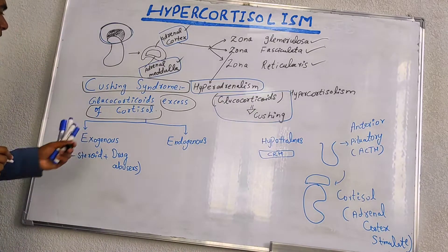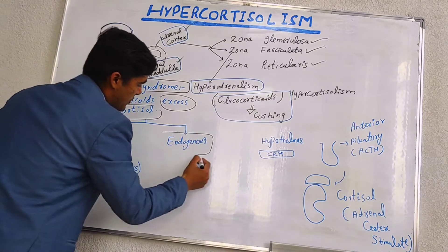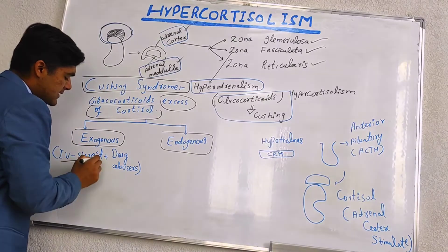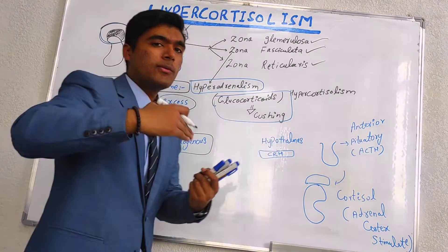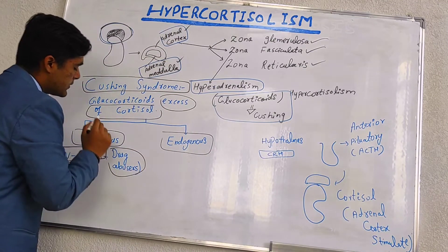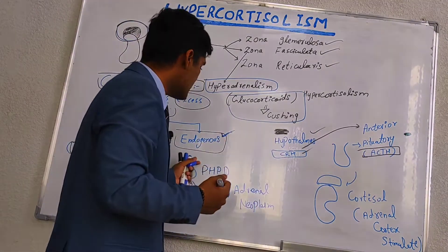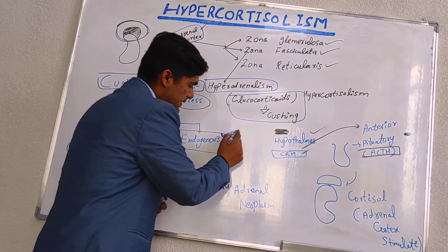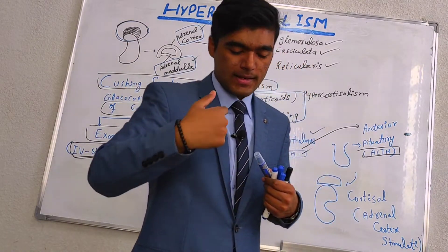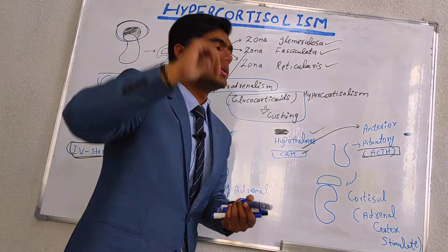Cushing syndrome is divided into two types: exogenous and endogenous. Exogenous means from outside — it is basically IV steroids or drug abuse that causes this. Endogenous type means there is nothing from outside involved; there is an inside mechanism that causes hypersecretion of cortisol.